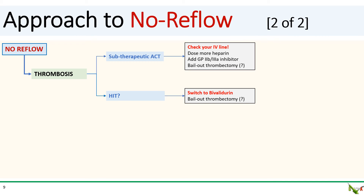Other possibilities: device or wire thrombosis is possible. This is usually due to a subtherapeutic ACT or more rarely HIT, or heparin-induced thrombocytopenia. Make sure you check that your IV line is working — this is especially true if your ACT does not seem to bump despite more and more heparin. Consider adding a 2b3a inhibitor or switching to bivalirudin.